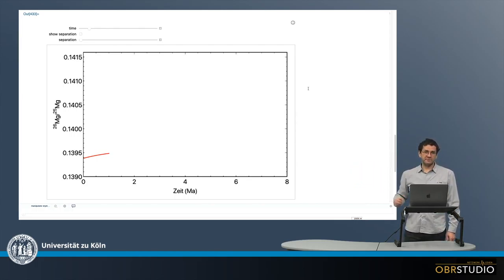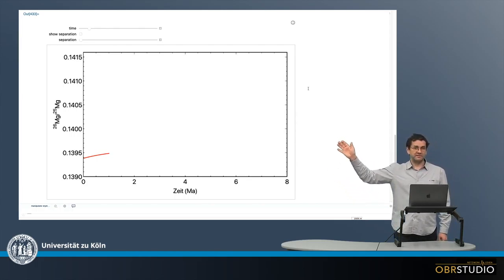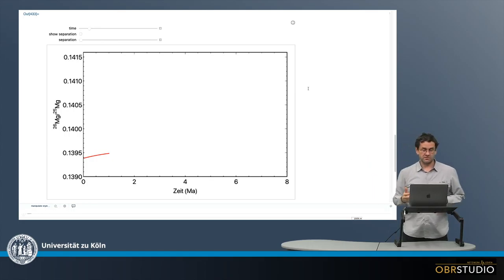Here on the x-axis is the time in millions of years, and on the y-axis is the daughter, 26 magnesium, relative to a normalization value.